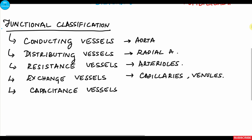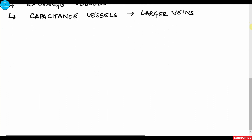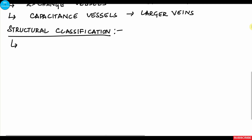The last group of vessels is the capacitance vessels, which store a large amount of blood; larger veins are examples of capacitance vessels. The structural or histological classification divides blood vessels into elastic arteries, muscular arteries, small-sized veins, and larger veins.